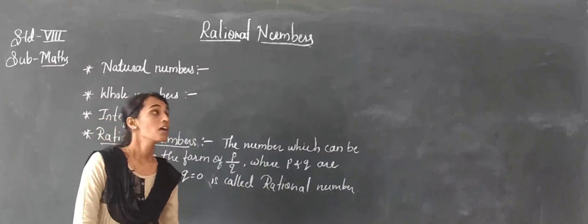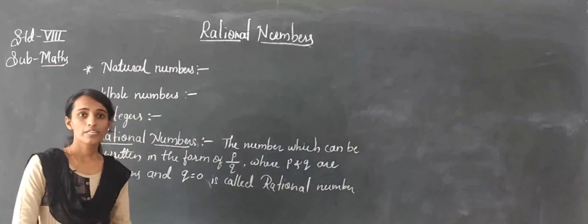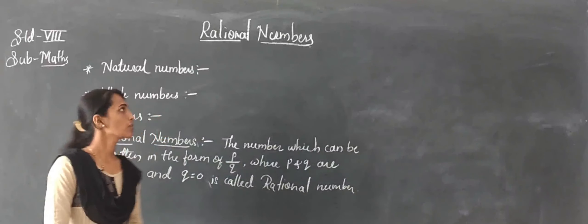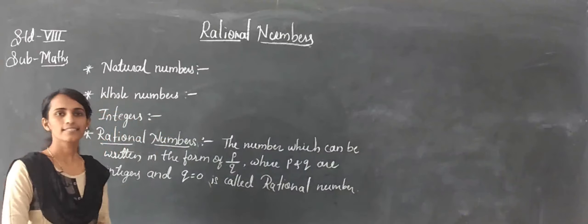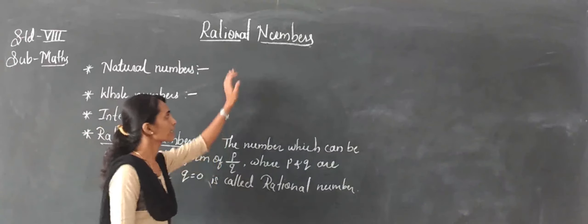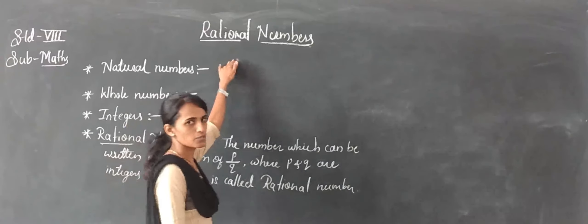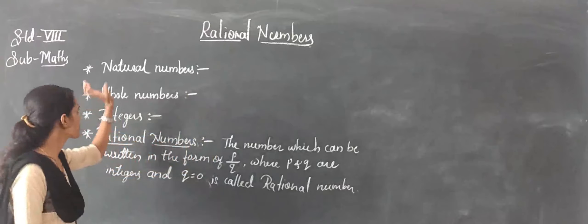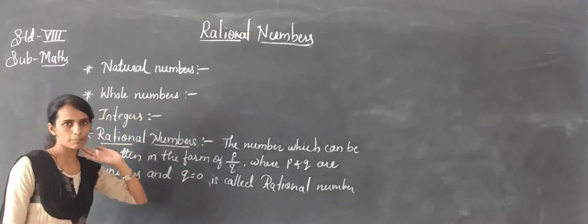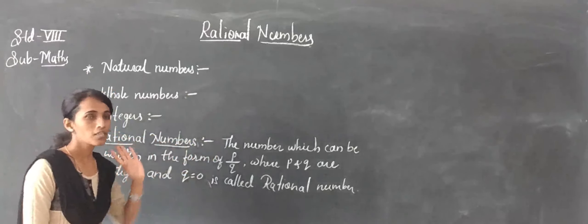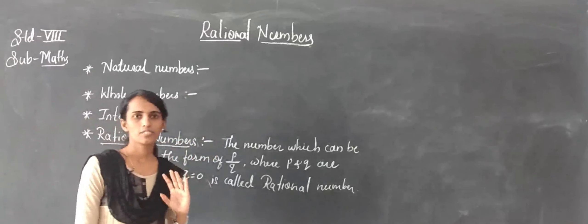Hello dear students. In maths, the first topic is already completed. So now we are going to study the second topic, that is rational numbers. In rational numbers, first we will study the numbers — what are the numbers and what are the types of numbers?